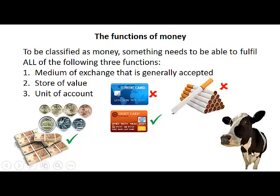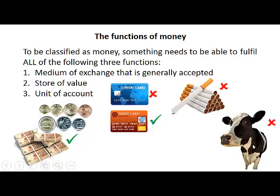If we look at cattle, in some societies cattle can also be used as a medium of exchange. It can be regarded as a store of value because you can sell it in the future. However, it is not generally accepted — not everyone will be able to accept cattle as payment. Especially for small things that you want to buy, it would be difficult to divide the cattle. So, cattle is not a type of money. You can see that we mainly look at the first two functions when we consider whether something can be regarded as money.